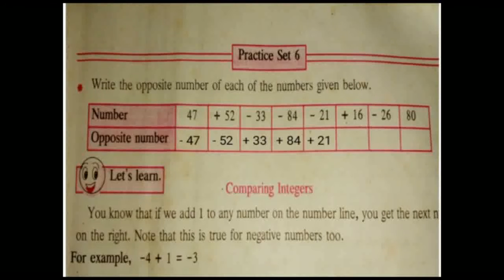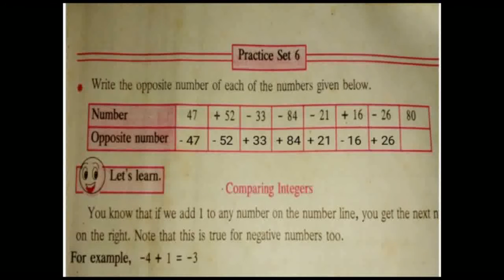Plus 16 becomes minus 16. Minus 26 is equal to plus 26. Last number is 80. Number 80 again has no sign, so it is a positive number. Plus 80 becomes minus 80.